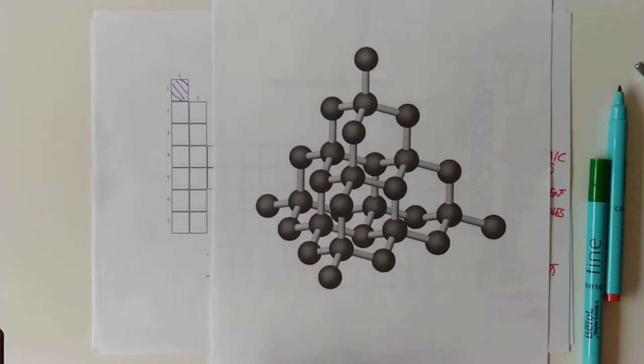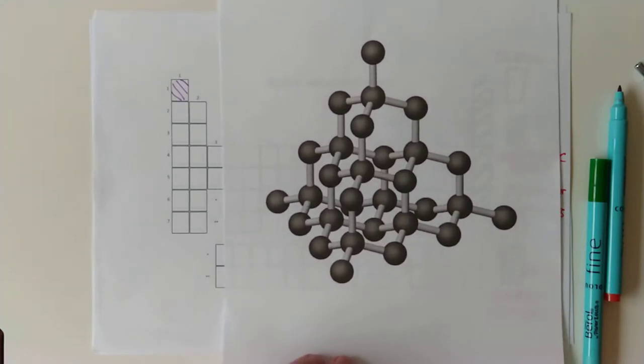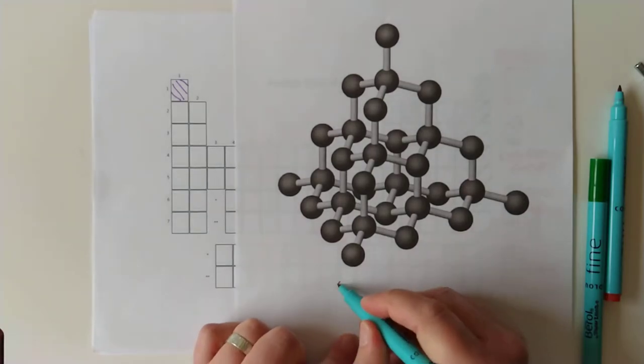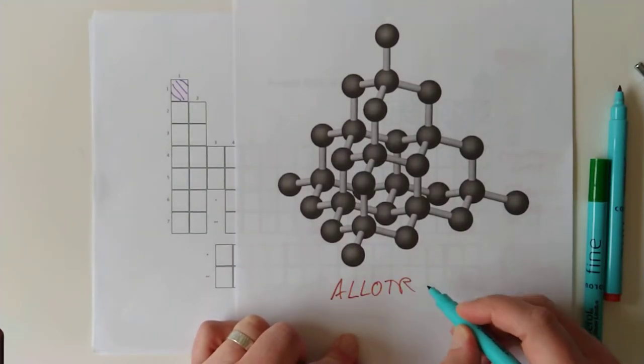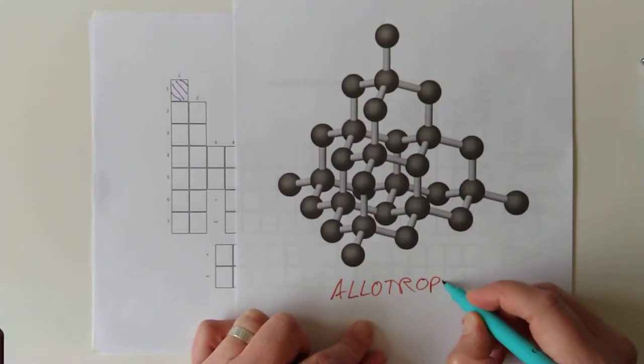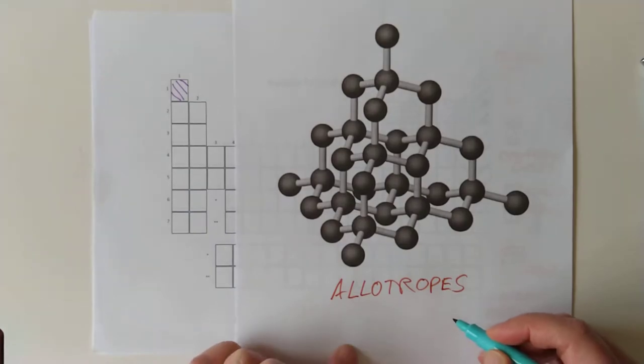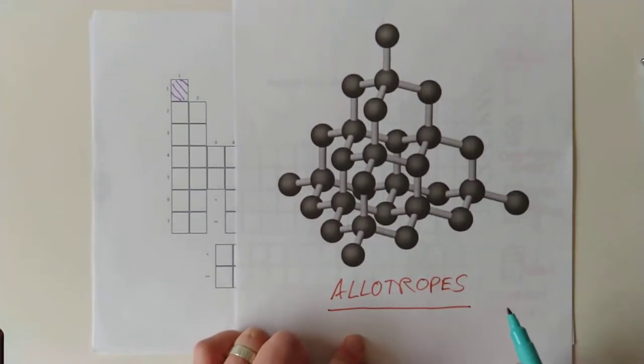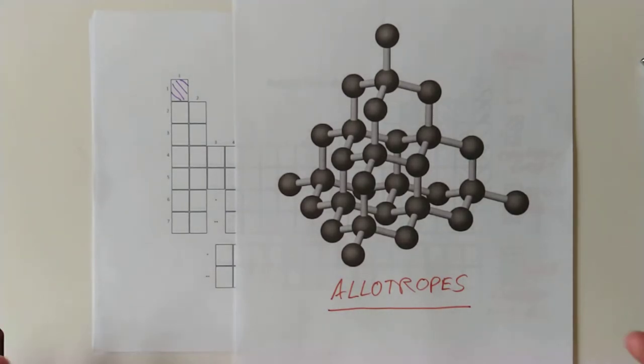So this is carbon in the form of diamond. Remember I said last time, diamond can have different allotropes, that's different forms. There's actually a load of different allotropes, there's a really cool Wikipedia illustration on all the different allotropes of diamond, some of which I didn't know about either until recently.